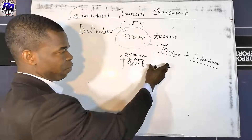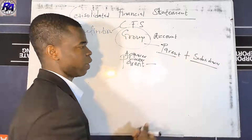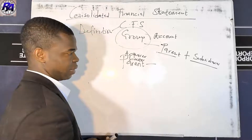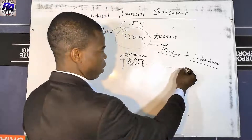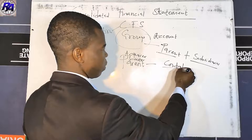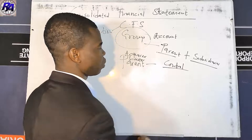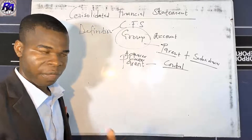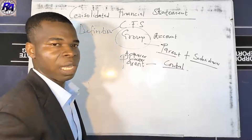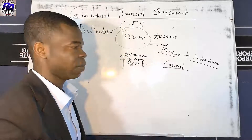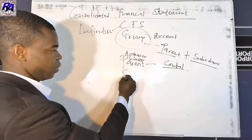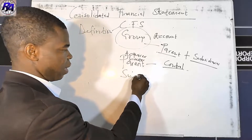The parent is obtaining control over the subsidiary. The keyword here is control, and we will look at control in detail under IFRS 10 — what control means, as it is the whole foundational concept. Then let's look at what a subsidiary is.